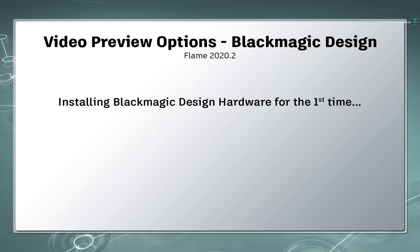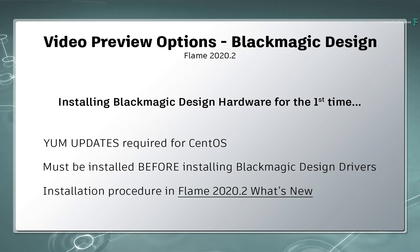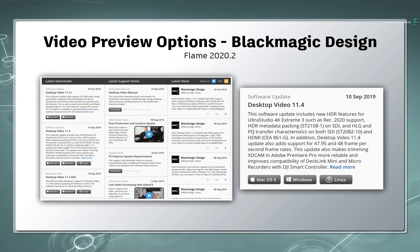If this is the first time you are installing the Blackmagic Design hardware on your system, you will need to yum update two OS packages for Linux before installing the drivers. This is covered in the What's New documentation for the Flame 2020.2 products. Next, download the Desktop Video Package 11.4 for Linux from the Blackmagic Design website, and please ensure you read the instructions to correctly install the drivers.